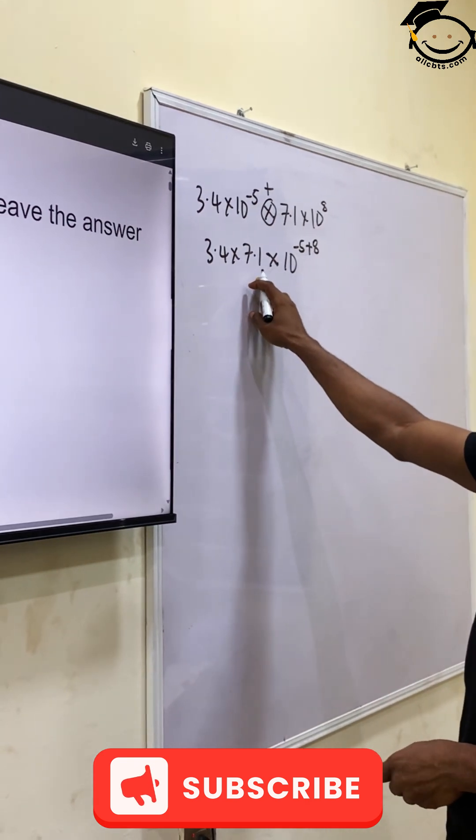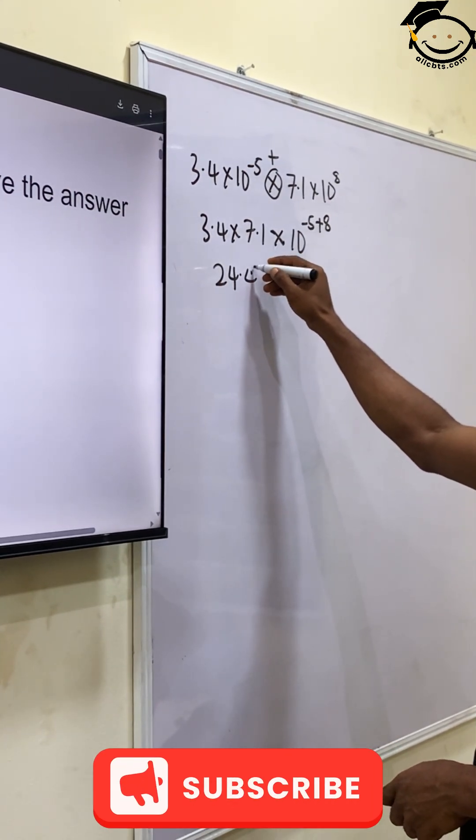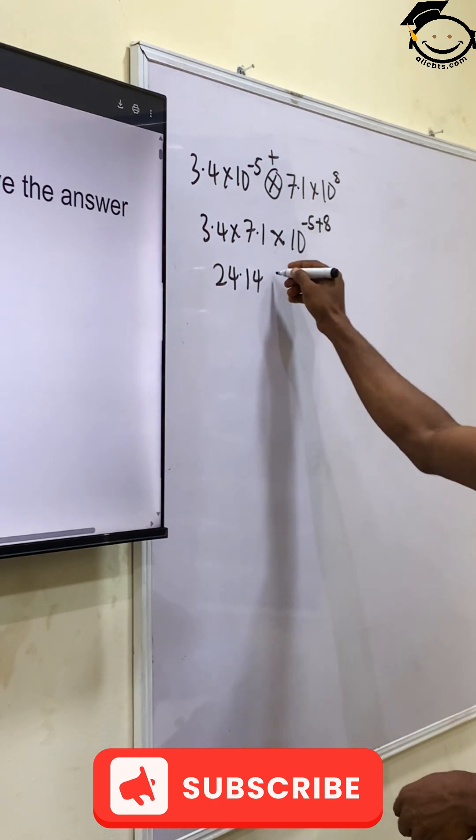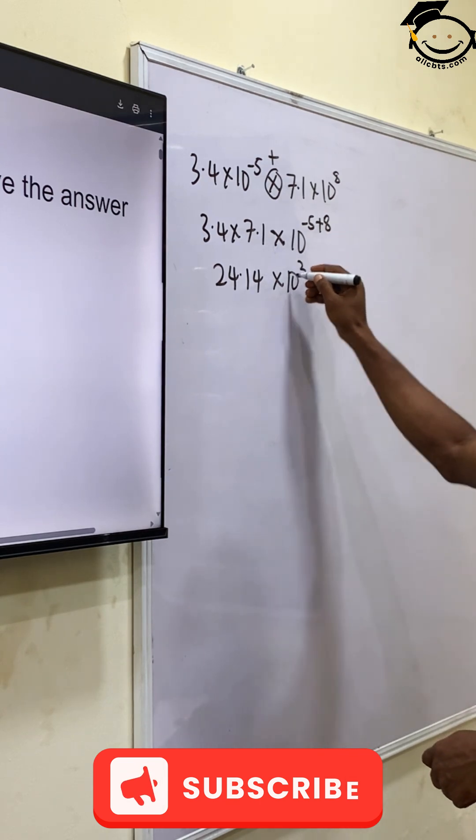3.4 times 7.1 will give us 24.14, times 10 raised to the power of minus 5 plus 8, which will give us 3.